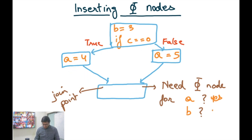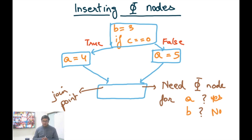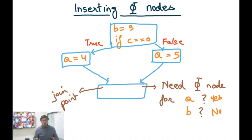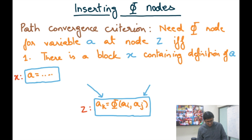Intuitively, with this example, we can figure out which variables need phi nodes. But the naive algorithm would have created phi nodes for both a and b, which is wasteful. We need an algorithm that identifies where phi nodes are needed. I won't discuss the most efficient algorithm, but at least we should define the criterion to decide whether to place a phi node or not.